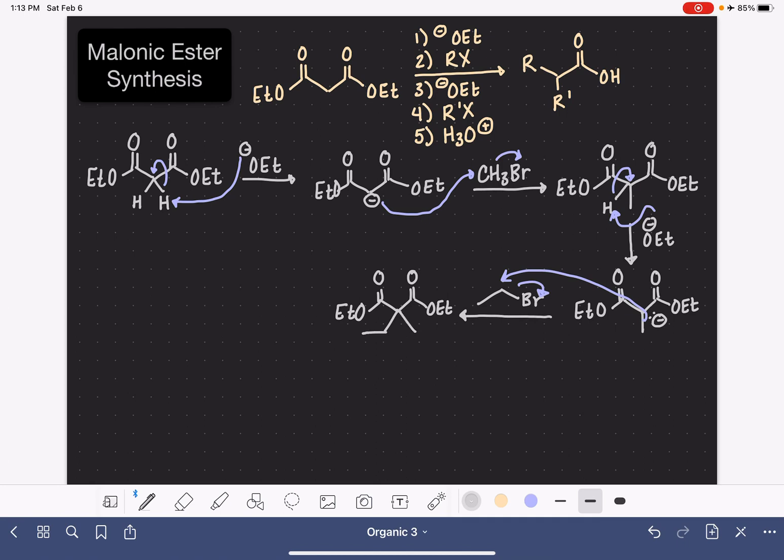Now in the next part of the reaction, the last step, step number five, we add some acid H3O+. This acid is going to hydrolyze the ester groups. This is a reaction that you learned in the carboxylic acid derivative information. The H3O+ will convert both of the ester groups into carboxylic acid groups. Instead of having a diester, we now have a di-carboxylic acid.